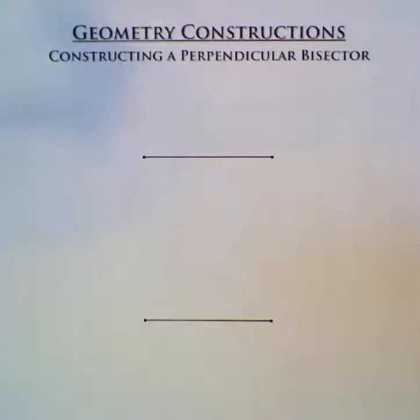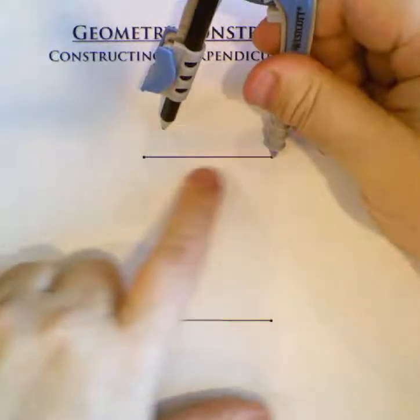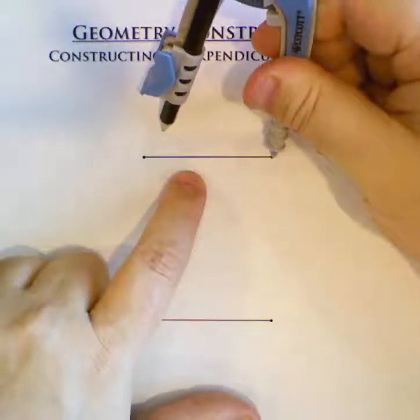Now we're going to do the construction for a perpendicular bisector. To do this, you need to open up your compass to some length which is greater than half of the length you're going to bisect.